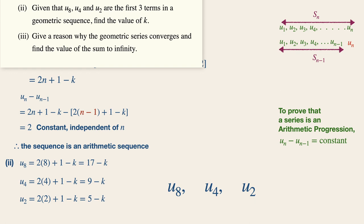It means that they are connected with the same common ratio between each of the terms. Thus, if we take u4 divided by u8, the common ratio that we get is equal to the common ratio when we take u2 divided by u4, giving us this equation over here, where we can then solve for the value of k.